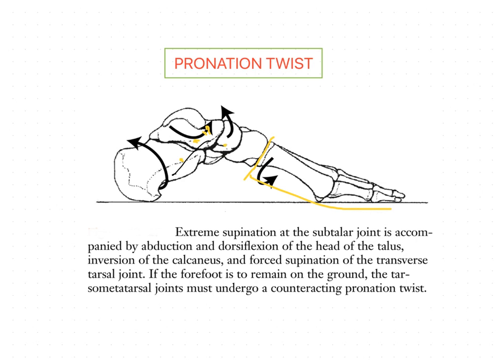At the naviculocuboid joint we can find such movements. When this supination becomes extreme, the transverse tarsal joint is unable to absorb these extreme forces, so the transverse tarsal joints also undergo supination. That means both the subtalar as well as the transverse tarsal joints are now locked in extreme supination.